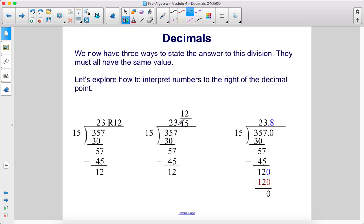We now have three ways to state the answer to this division. They must all have the same value. Let's explore how to interpret numbers to the right of the decimal point.